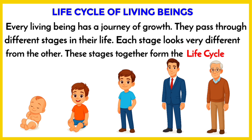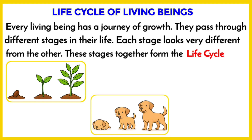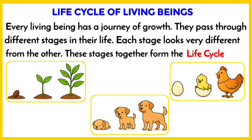For example, we are born as tiny babies, then we grow into children, later become adults, and eventually we grow old. However, it's not just humans who go through life cycles — every plant, animal, and even the tiniest insect or bird has their own stages of life.